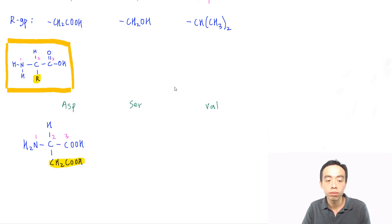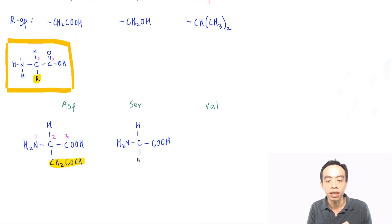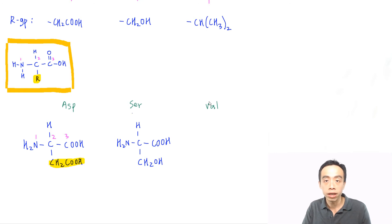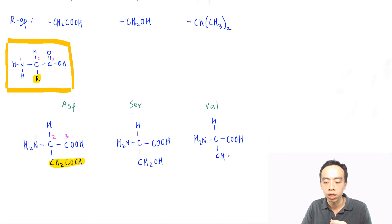Similarly for SER, I write position 1 as my amine group, position 2 as a carbon with hydrogen and R group, and position 3 as my acid group. The R group is CH2-OH, sticking out of the second carbon. For VAL, the same format applies: amine at position 1, carbon with hydrogen and R group at position 2, acid group at position 3. The R group for VAL is CH(CH3)2, written as CH with a bracket of 2 methyl groups.